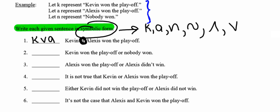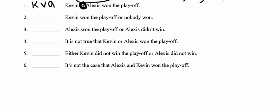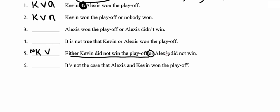Number 2: 'Either Kevin won the playoff or nobody won' is written as K V N. Number 5: 'Either Kevin did not win the playoff or Alexis did not win the playoff' is written as ¬K V ¬A.